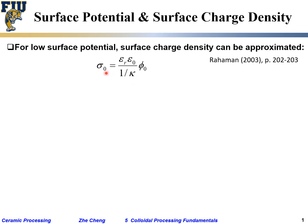The surface charge density can be approximated by the dielectric constant divided by the Debye length times the potential. This gives us the surface charge density.